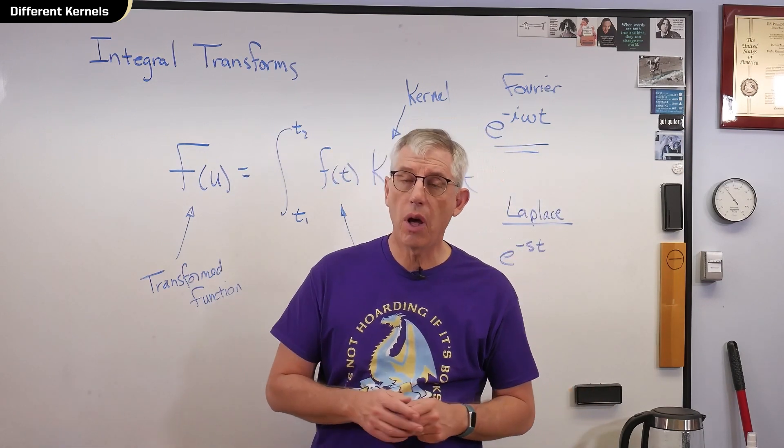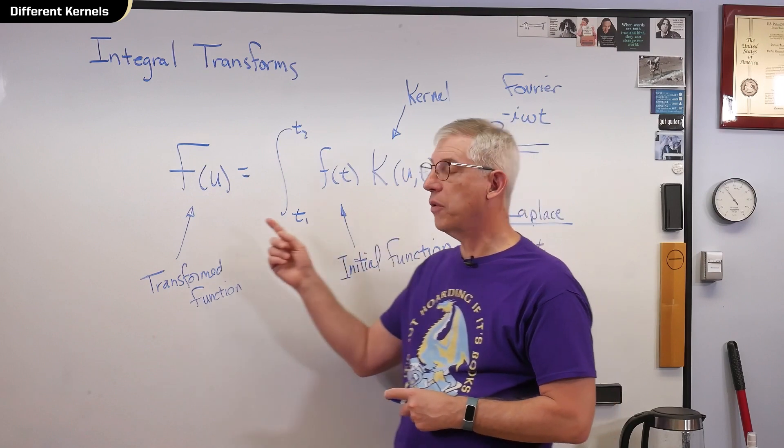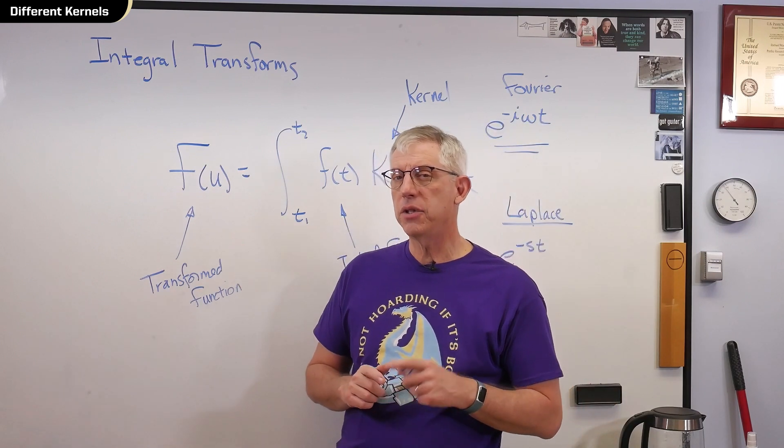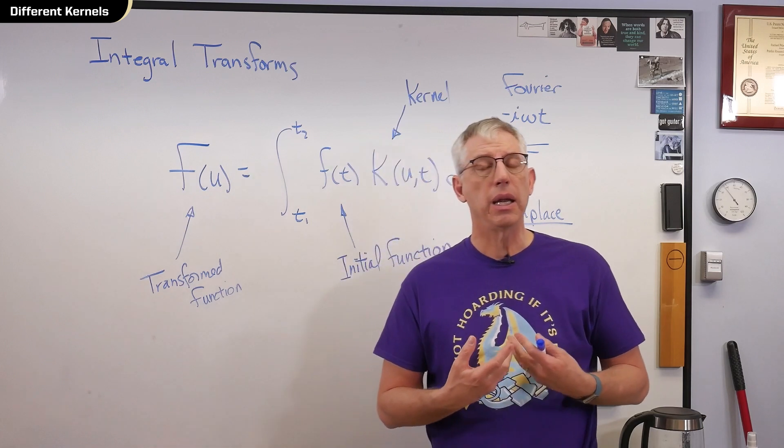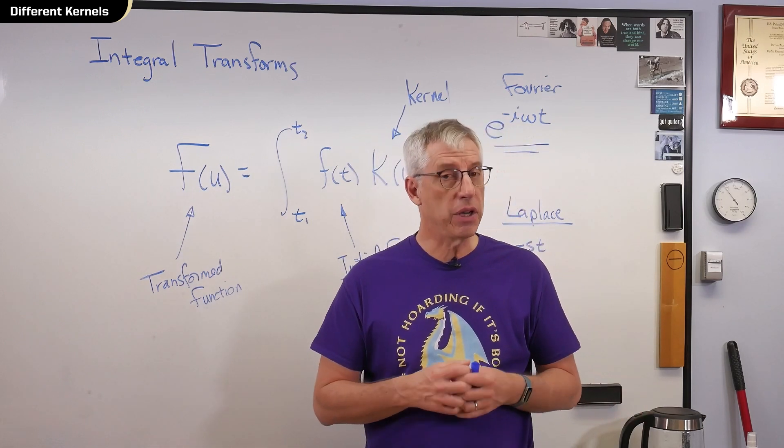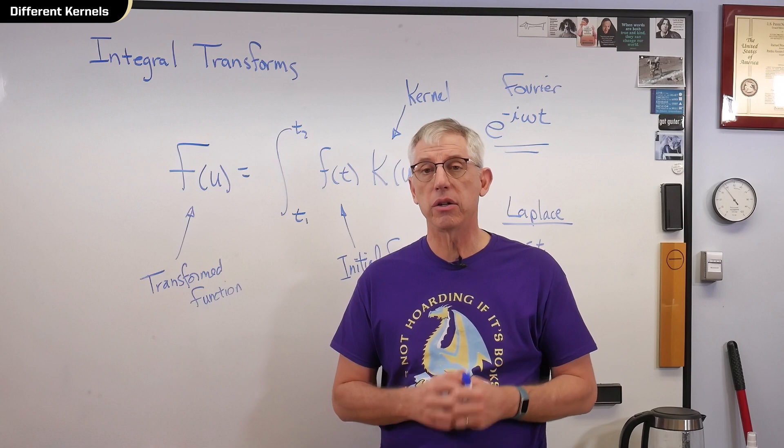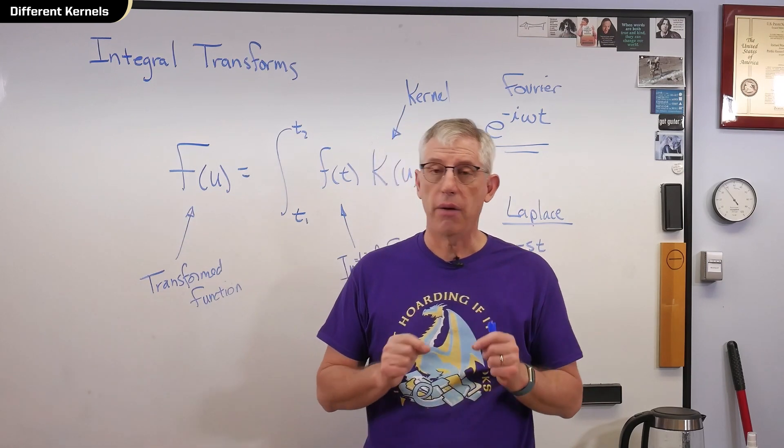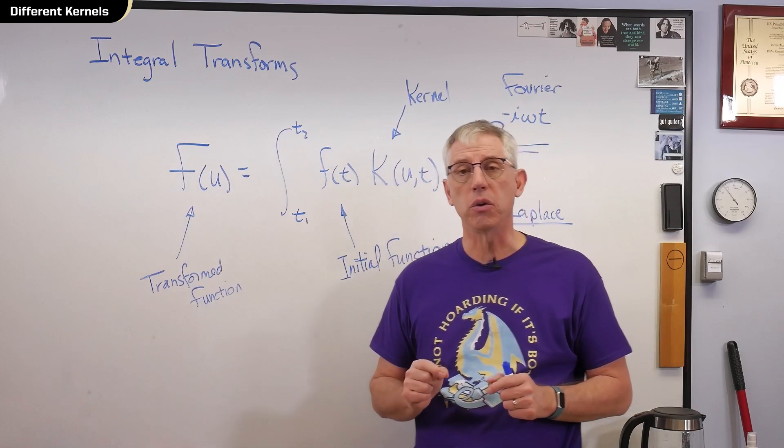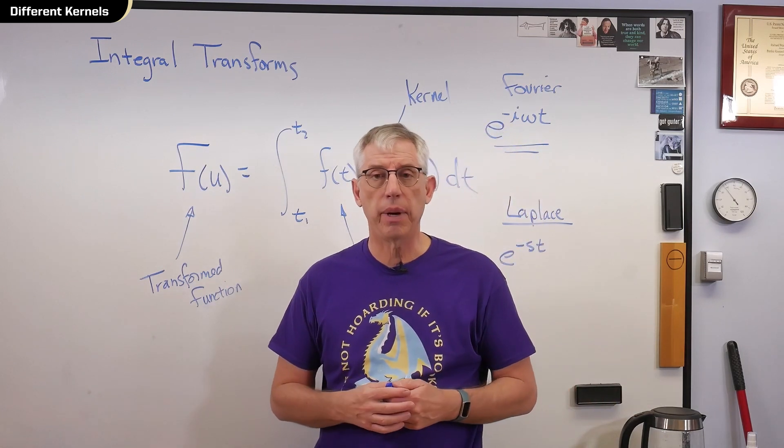One more thing you need to know, that when I transform from one to the other, I've changed how the function looks, but I haven't changed its meaning. And in the case of test data, if I do it correctly, I have not destroyed any information. That's how you can go back and forth between these two. You have to follow the rules, but if you do, you don't destroy any information.